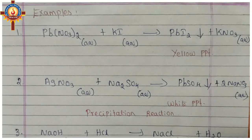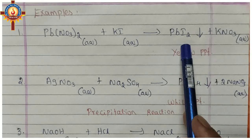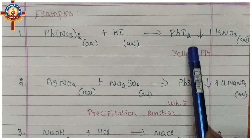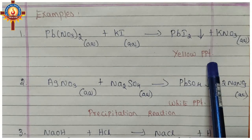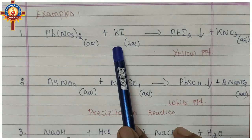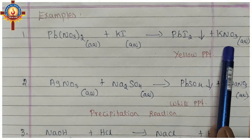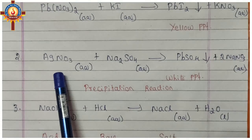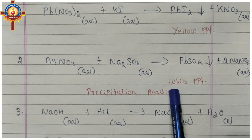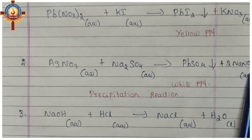Examples of double displacement reactions: first, lead nitrate reacts with potassium iodide to form lead iodide and potassium nitrate. Lead iodide is yellow in color, so a yellow precipitate is formed — characterized by formation of a precipitate. The two chemical species exchange their places, giving lead iodide and potassium nitrate. Second, silver nitrate and sodium sulfate react to give lead sulfate as a white precipitate and sodium nitrate.